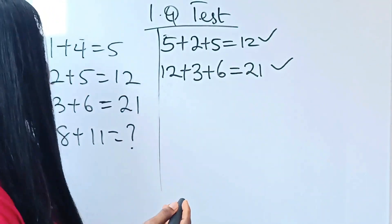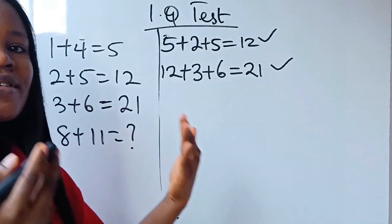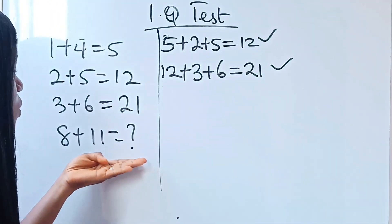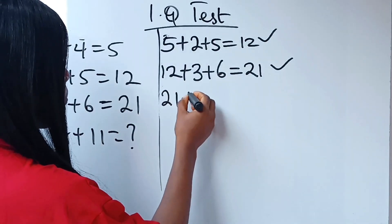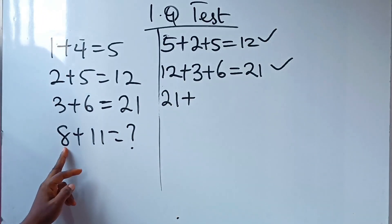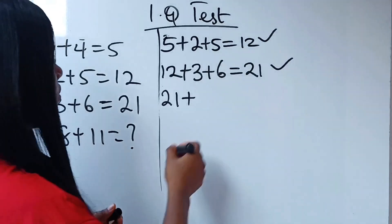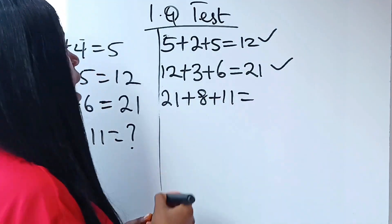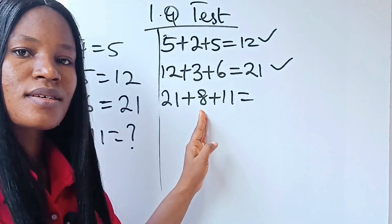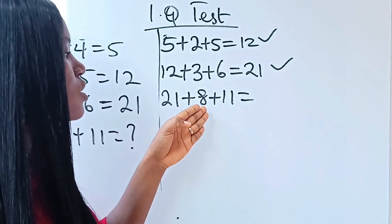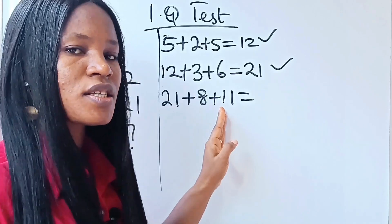Wow. They still got it right. They now said, that means to get this, this should be 21 plus 8 plus 11. And this is equal to 21 plus 8 is 29. And 29 plus 11 is 40.